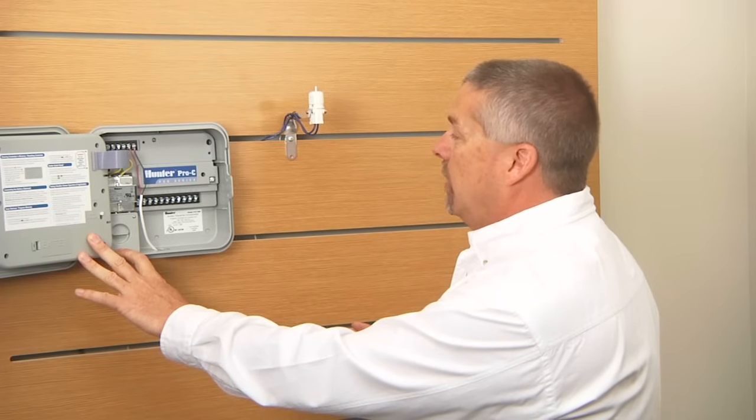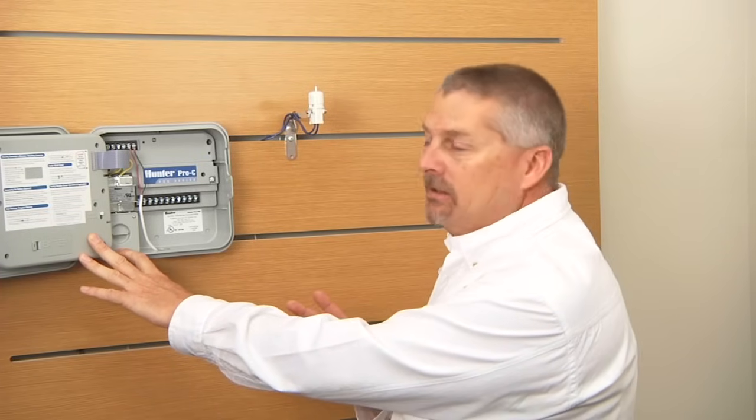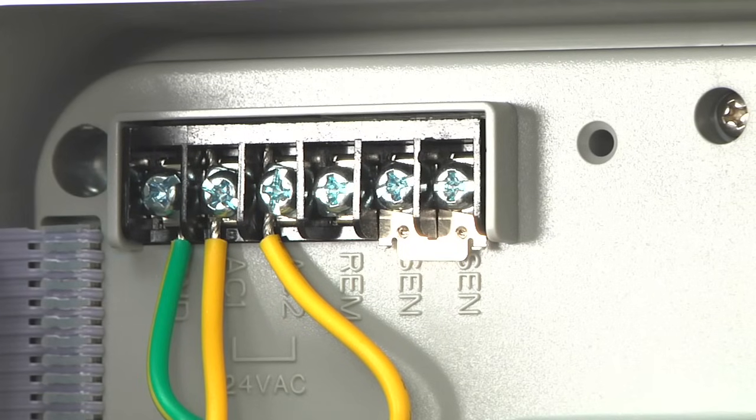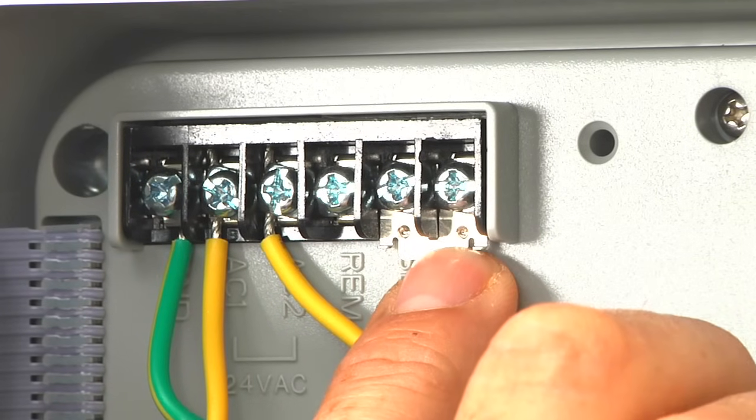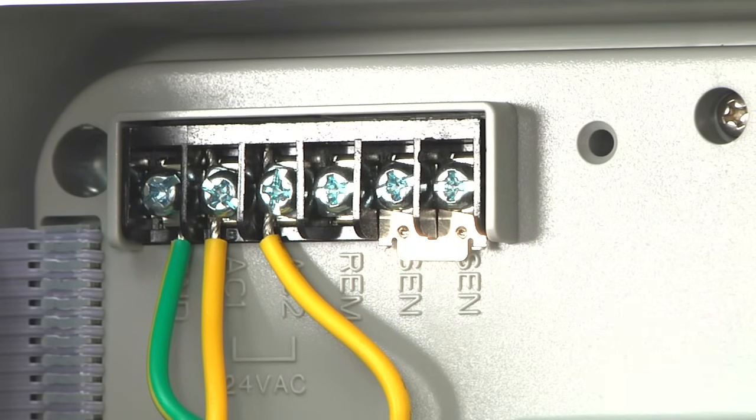These rain sensors are called normally closed circuit. So when the controller comes from the factory, it has a small chrome jumper tab that connects the two sensor terminal screws together in lieu of a rain sensor.